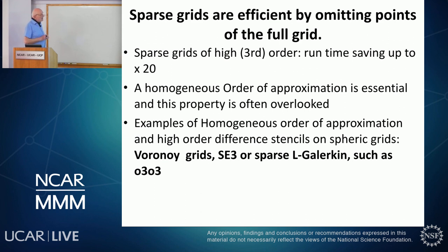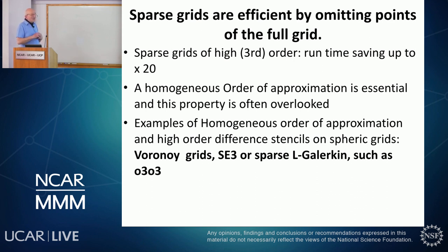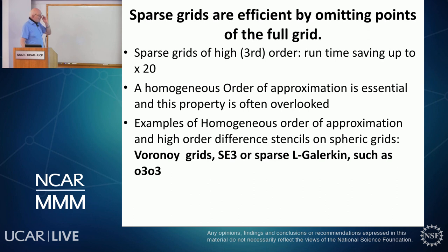The efficiency of spherical grids comes by leaving out points from the full grid. The basis is always a full grid and you leave out points, and from that it follows there should be a saving of CPU time — that goes up to a factor of 20. For cubed and rhomboidal grids you get only a factor of eight if you do the physics correctly, or four without physics. But for hexagonal grids in three dimensions, you are supposed to get a factor of 20 — though I have not tested it in three dimensions.